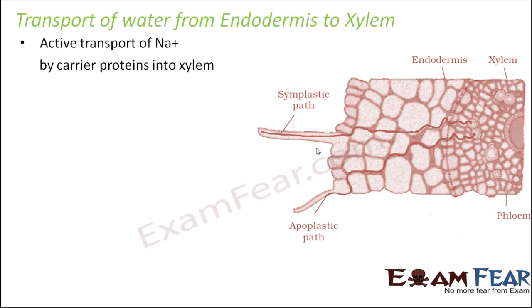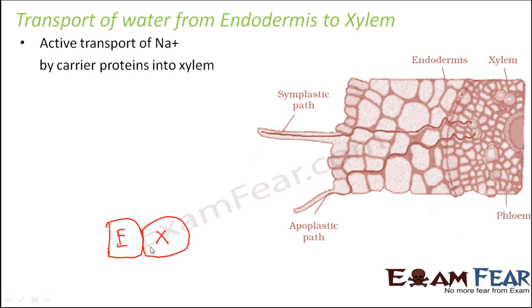Active transport of sodium ions by carrier proteins takes place into xylem. Let us understand this simply — suppose this is your endodermis and this is xylem. The sodium ions present in the endodermis are carried into xylem by active transport. This means even though the concentration of sodium ions is less in xylem and more in endodermis, energy is applied to transport them from endodermis to xylem.